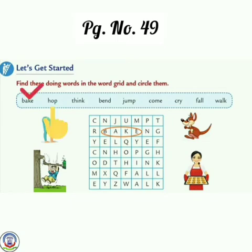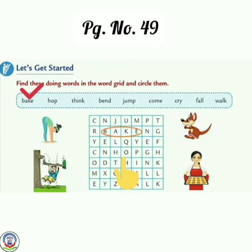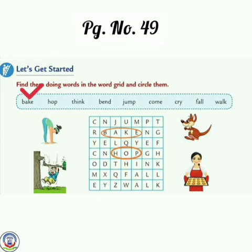Next is 'hope.' Hope is showing some action. Ab is grid mein se 'hope' word dhundhiye. Yeh raha — H-O-P, hope. Hope par circle karo. Aur upar diye gai box mein hope par tick karenge.